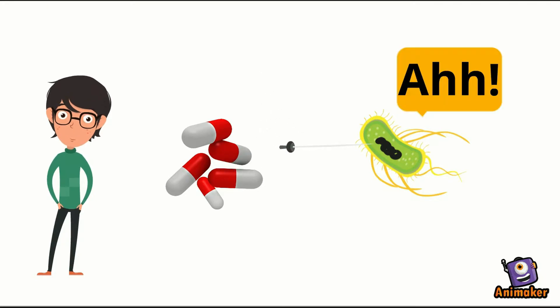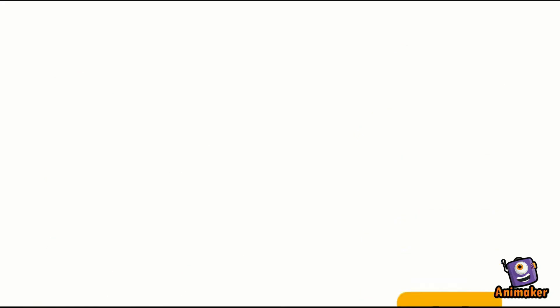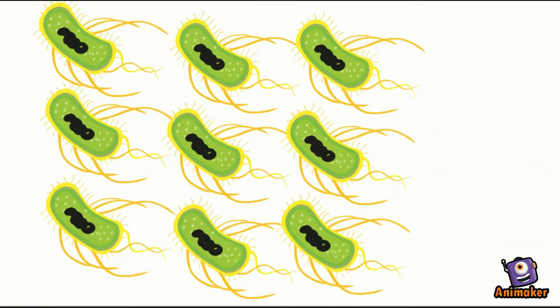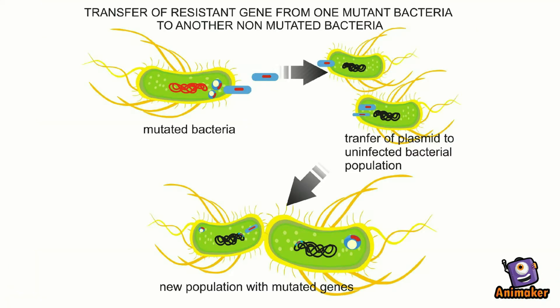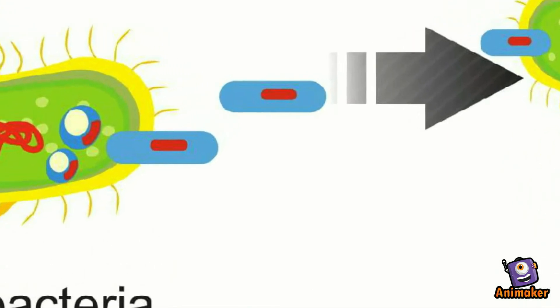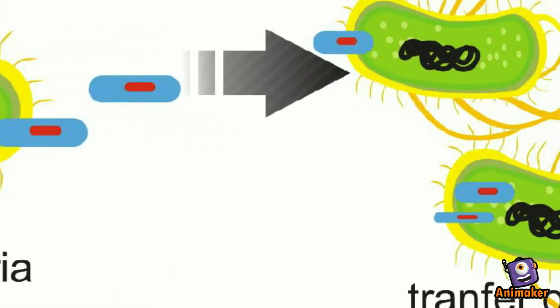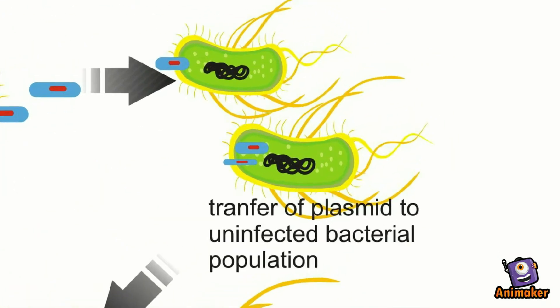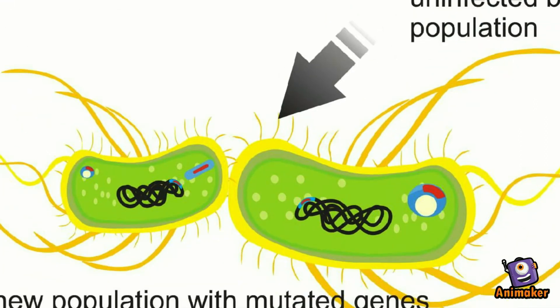As a defense mechanism, bacteria stimulate their innate ability to generate resistance whenever antibiotics threaten to wipe out the bacterial colony. Plasmid-mediated resistance is the most common method. Plasmids are small bits of genetic material — the mode via which mutated DNA material, in the form of copies, can be transferred to a non-resistant bacterial colony.